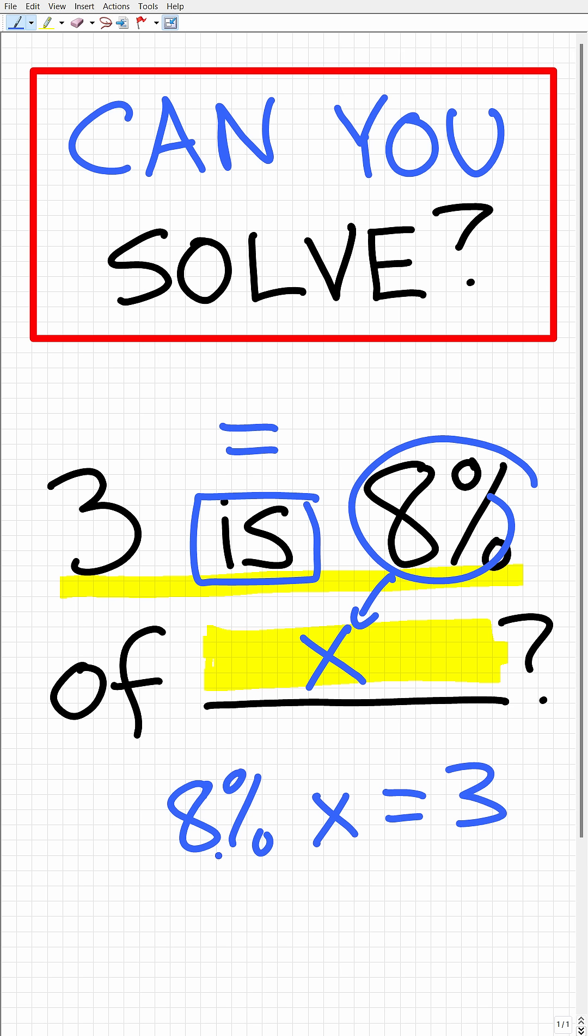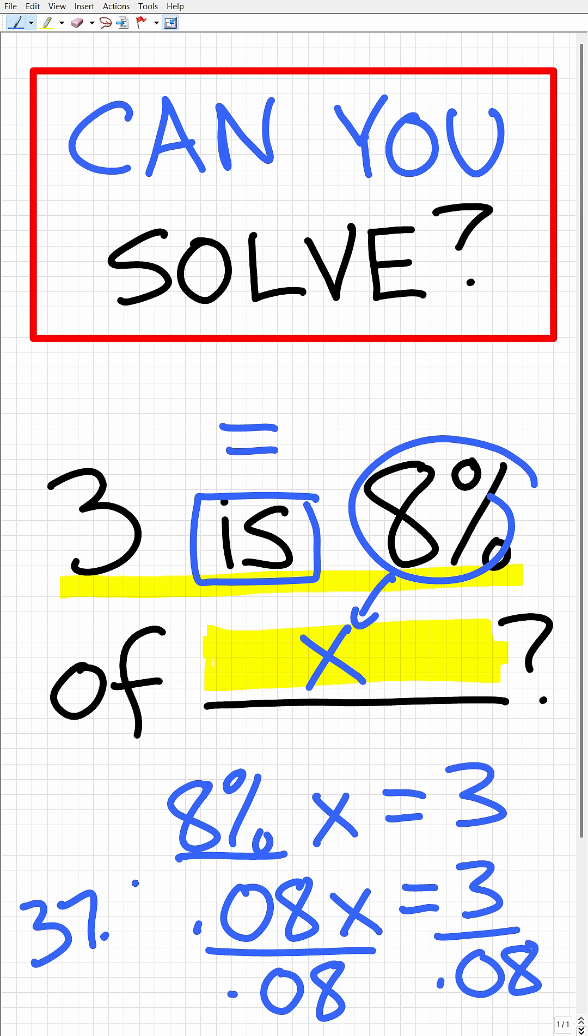So how do we find the percent of a number? We're going to convert this to a decimal. So this is 0.08 times X, and that's equal to three. To solve this basic equation, all we have to do is divide both sides of the equation by 0.08, and three divided by 0.08 is going to be 37.5, which is the correct answer.